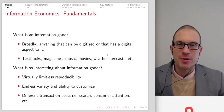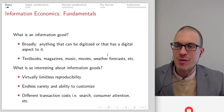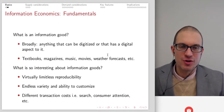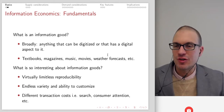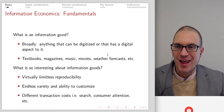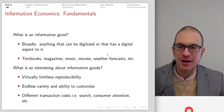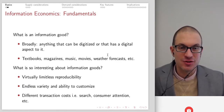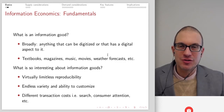Firstly, we'll think about what we mean by an information good. One broad definition is it's anything that could be digitized or has some digital aspect to it. This could be textbooks, magazines, lecture videos like this one, movies, weather forecasts, and so on and so forth.